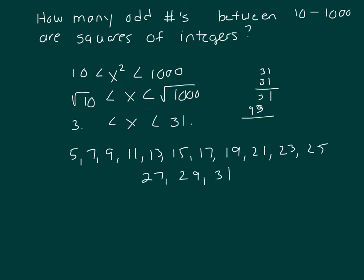31 would be included. Counting: 1, 2, 3, 4, 5, 6, 7, 8, 9, 10, 11, 12, 13, 14. That's not very glamorous, but there you go.